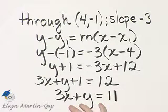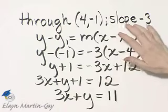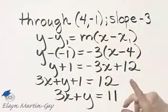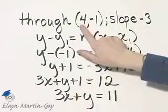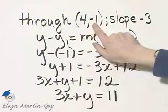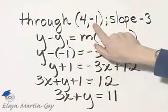Here is my equation in standard form. I guarantee you the slope is negative 3 and it goes through this point. How can you check? Well, you can make sure that this line goes through this point by letting x be 4, y be negative 1, and see that a true statement results.